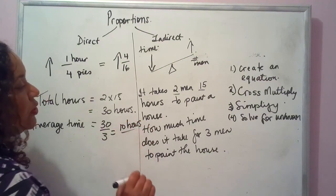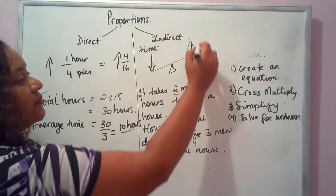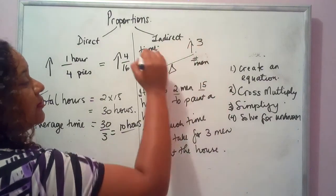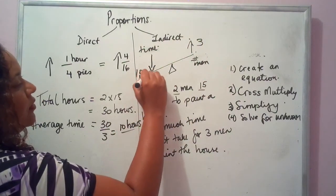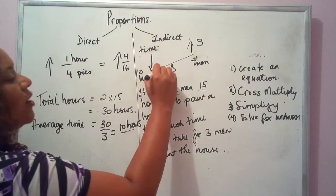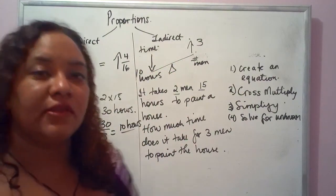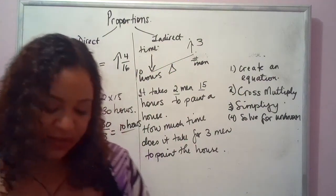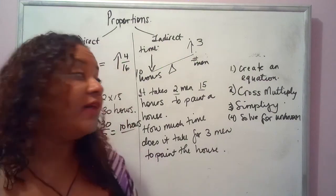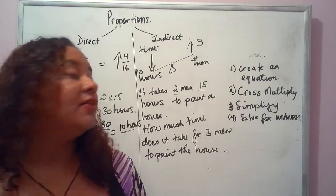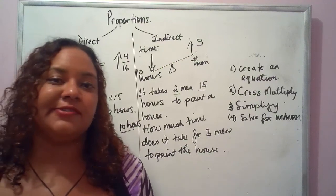You can see that when we increased our number of men to 3, the time went down. Common sense says many hands make light work — when you have more persons working on a task, you finish something faster.